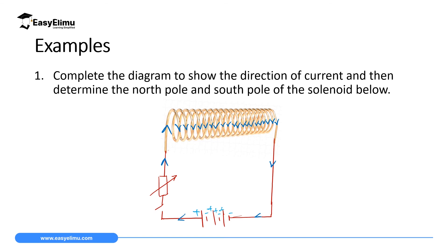Now to determine the north and south poles: take your right hand and hold the solenoid such that the fingers point in the direction of current. The fingers in front should be pointing down, and behind they should be pointing up. In that process the thumb will be pointing in one direction — that end will be the north pole, and automatically the other end is the south pole.